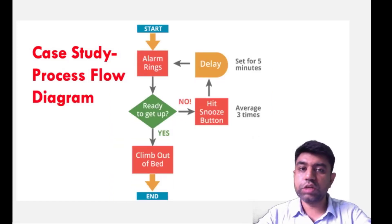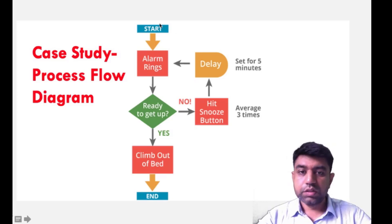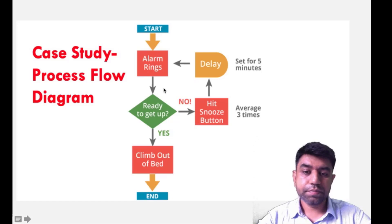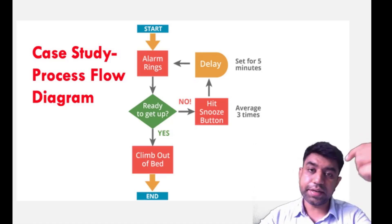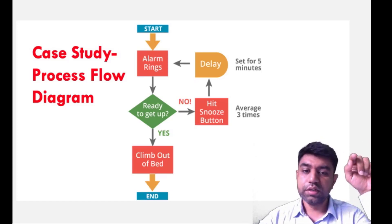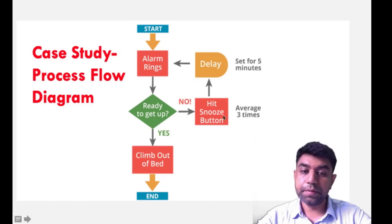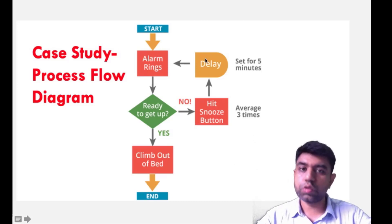In some books the QC tool listed instead of stratification is the process flow diagram, which is actually quite easy. We need a flow diagram — for example, a flow diagram of an alarm routine: set alarm, alarm rings, get up, hit snooze button causing a delay, alarm rings again, then climb out of bed. If there is some problem in between, a corrective action can be shown on the diagram, such as providing a snooze device for delay. In this way, quality can be improved.